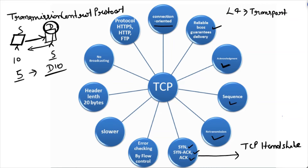In TCP we have error checking via flow control. If there is an error in a packet, that error will be identified by flow control. TCP is slower because it ensures the data transmission — unless and until the data has been transferred, TCP is not going to do anything else.